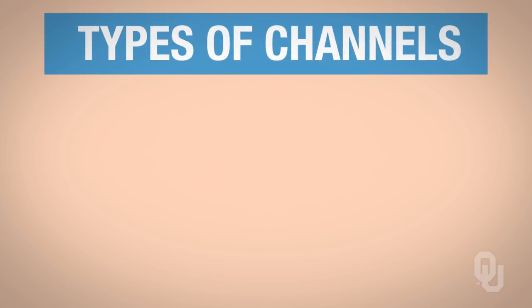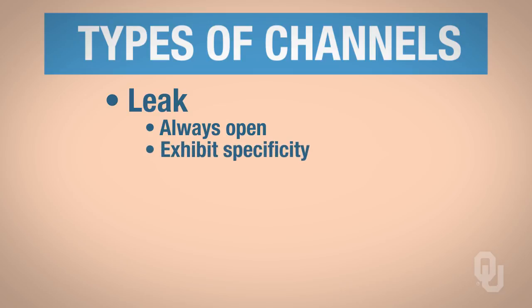So these are the types of channels. Now you've already been introduced to leak channels, and remember that leak channels are always open. Remember that leak channels also exhibit specificity. So we've already seen examples of sodium leak channels and potassium leak channels.